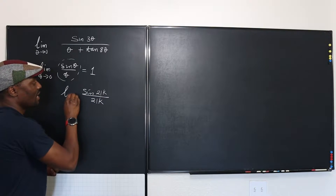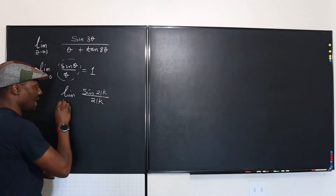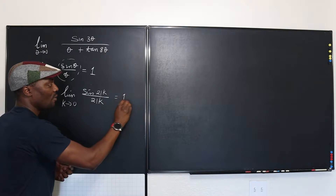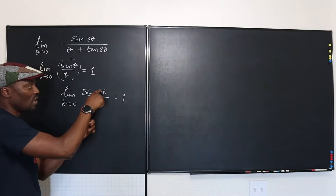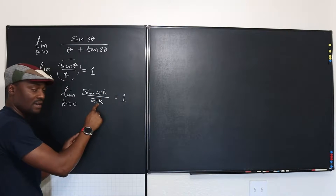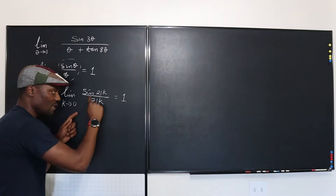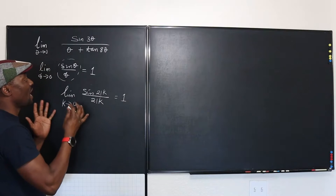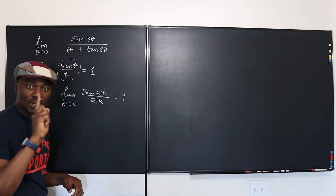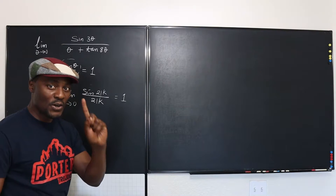well, that limit, as k goes to zero, will also give you one. So as long as what's inside the sine is the same as what's in the denominator, and both go to zero, then you're going to have this limit equal to one. That's one tool you want to keep in mind.